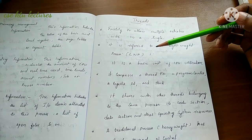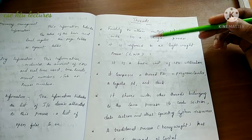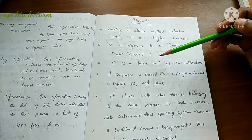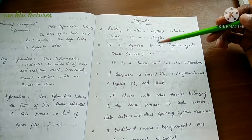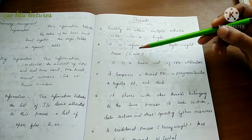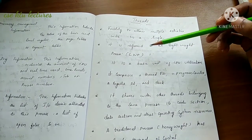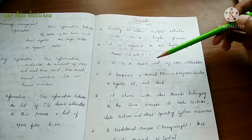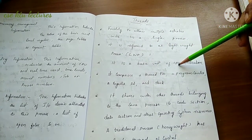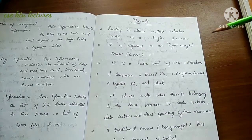A thread is a piece of code — a separate line of execution. It is referred to as a lightweight process (LWP), and it is a basic unit of CPU utilization.